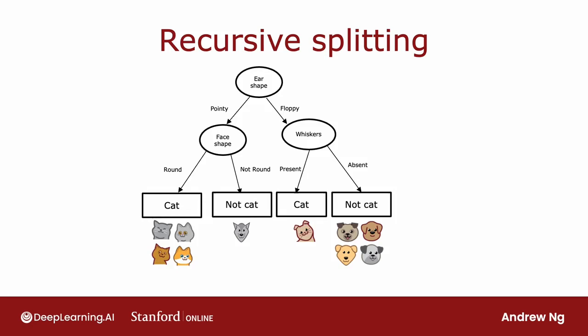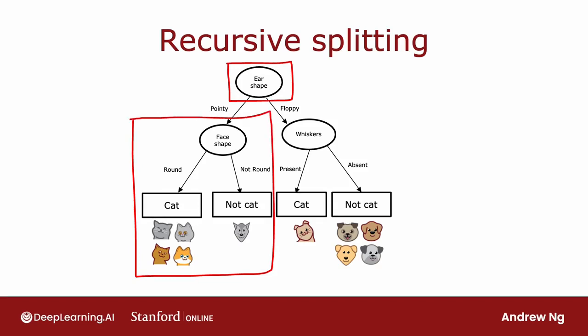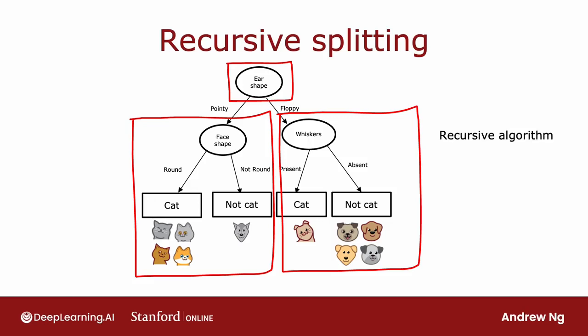That is the overall process for building the decision tree. Notice an interesting aspect: after deciding what to split on at the root node, the way we built the left sub-tree was by building a decision tree on a subset of five examples, and likewise for the right sub-tree. In computer science, this is an example of a recursive algorithm — the way you build a decision tree at the root is by building other smaller decision trees in the left and right sub-branches. Recursion refers to writing code that calls itself, and here you build the overall decision tree by building smaller sub-decision trees and putting them together.